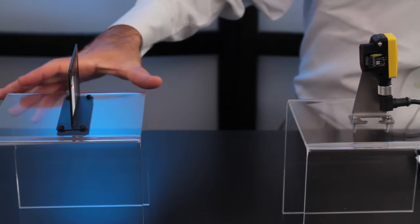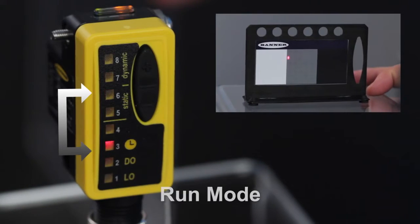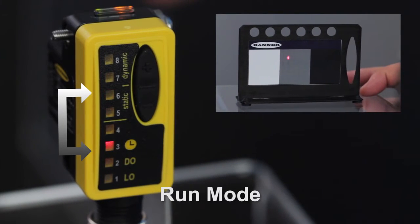Bar graph will show the quality of the contrast between switching points on a scale of 1 to 8, with 8 being the best, then the sensor returns to run mode.